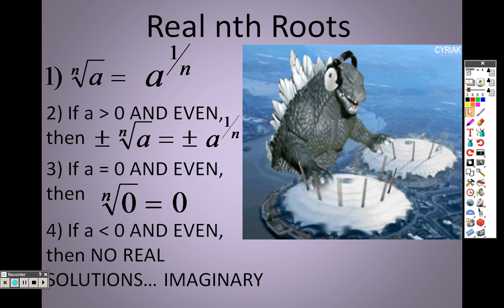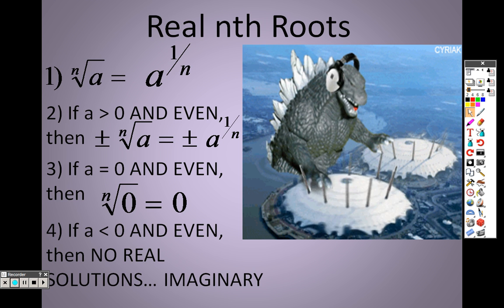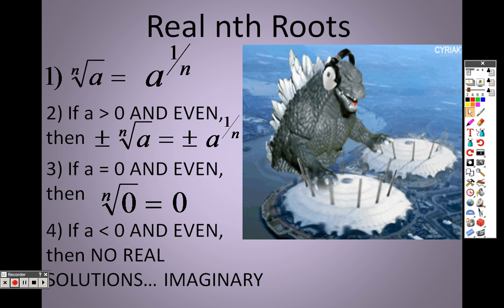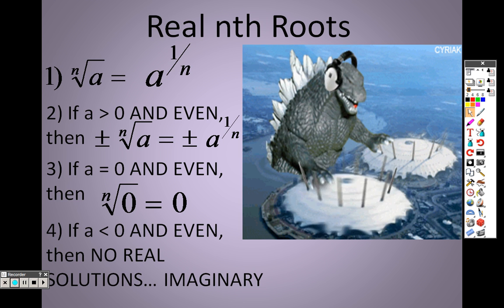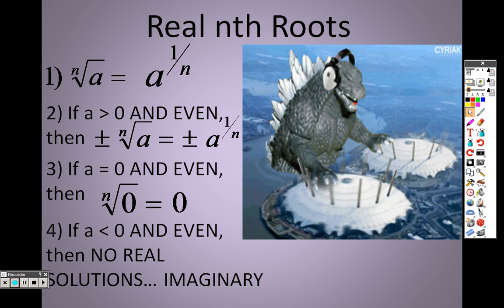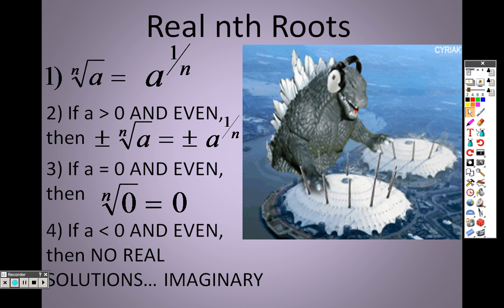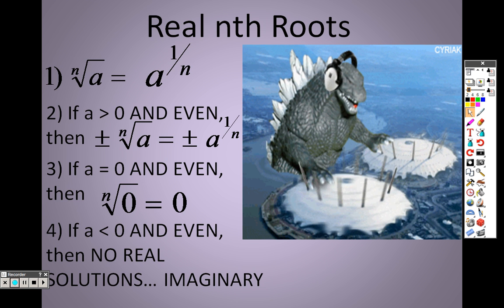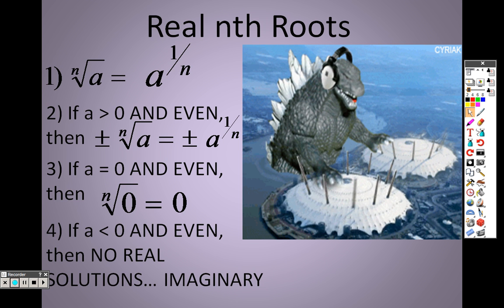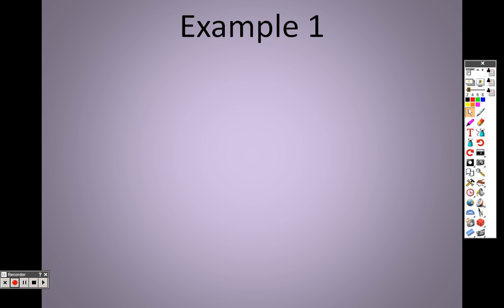However, if a is less than 0, you are going to end up getting imaginary solutions, which is what you already know, right? If we had a negative underneath the square root, what did we end up with? We ended up with i's. We talked about that in chapter 5, right? Negatives were dealing with imaginary numbers underneath square roots.